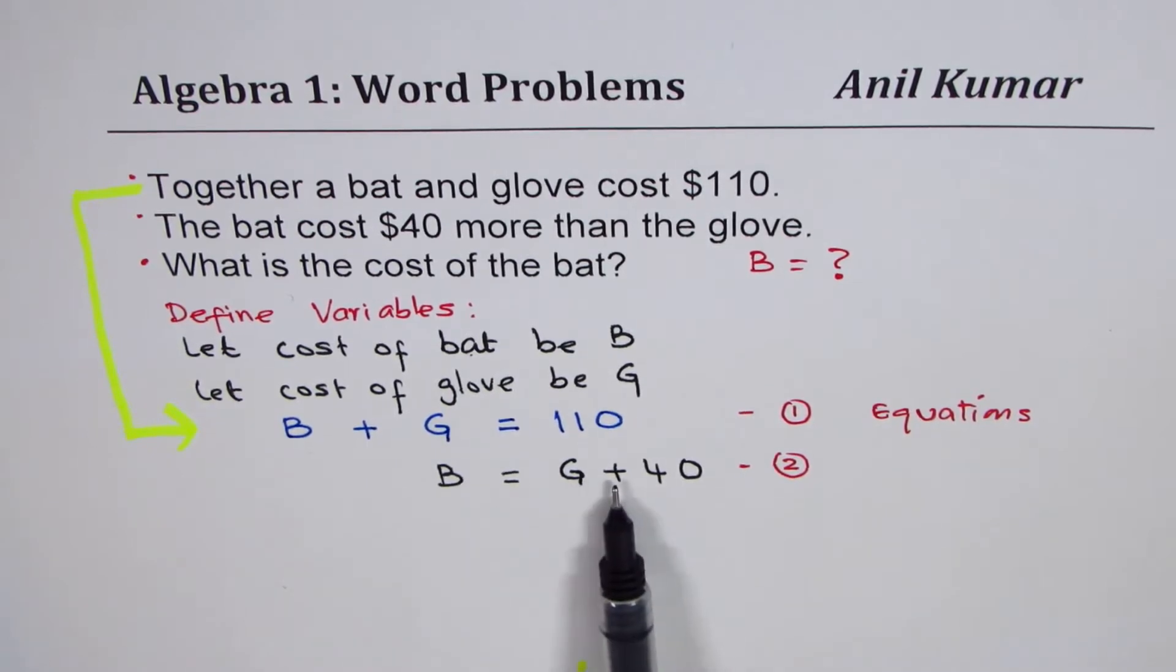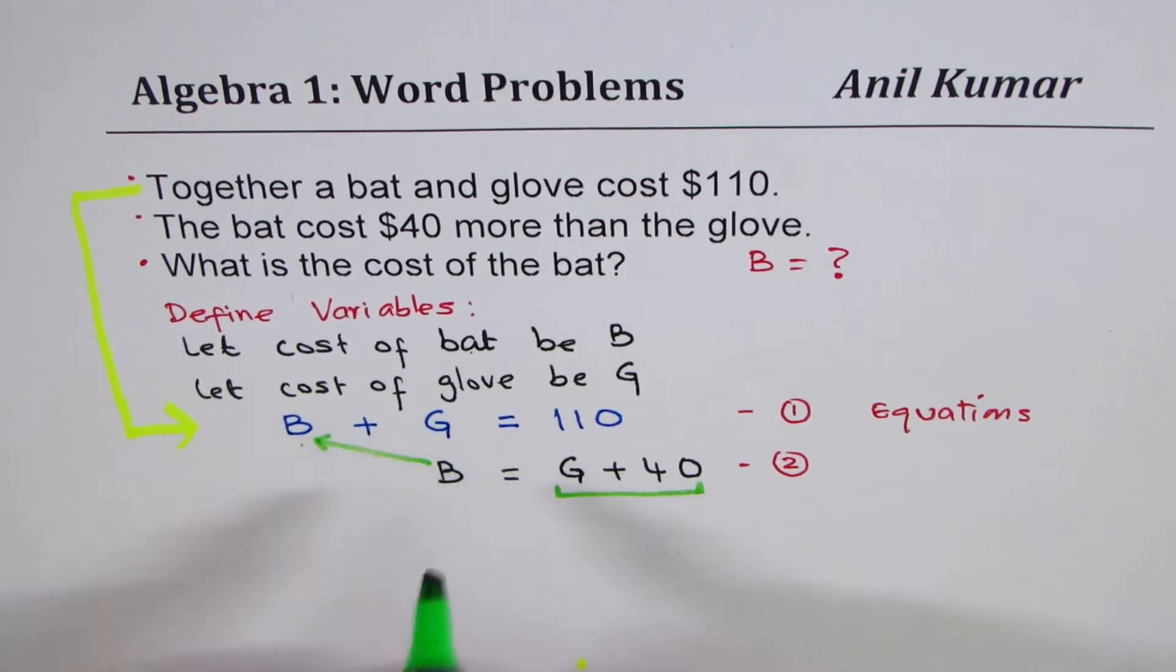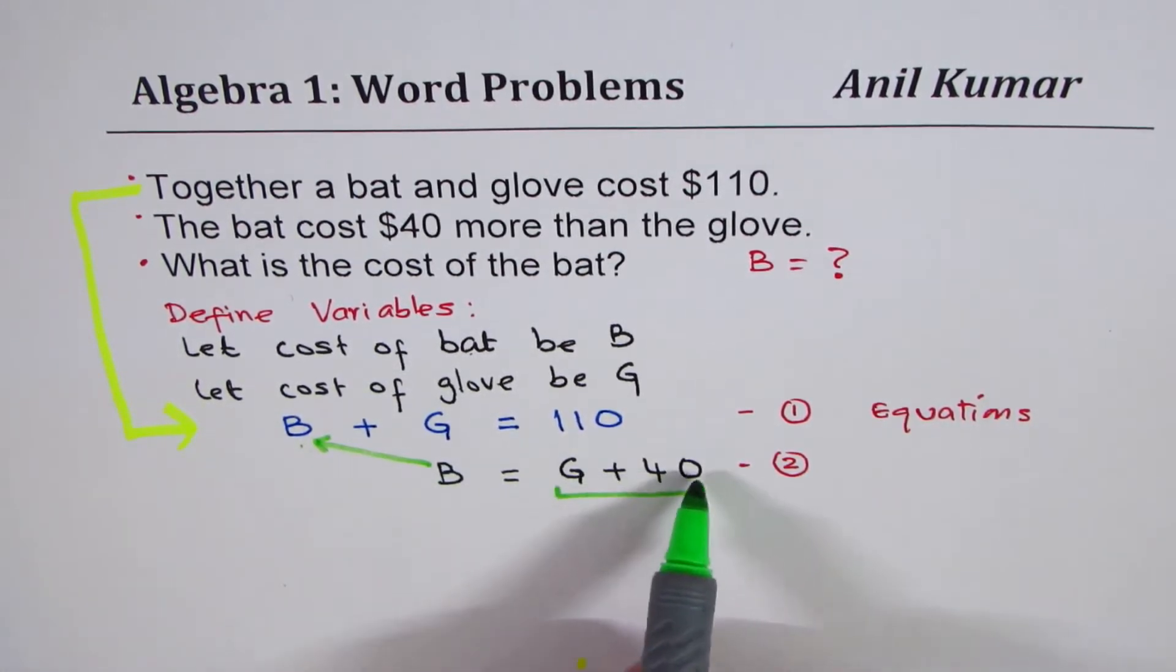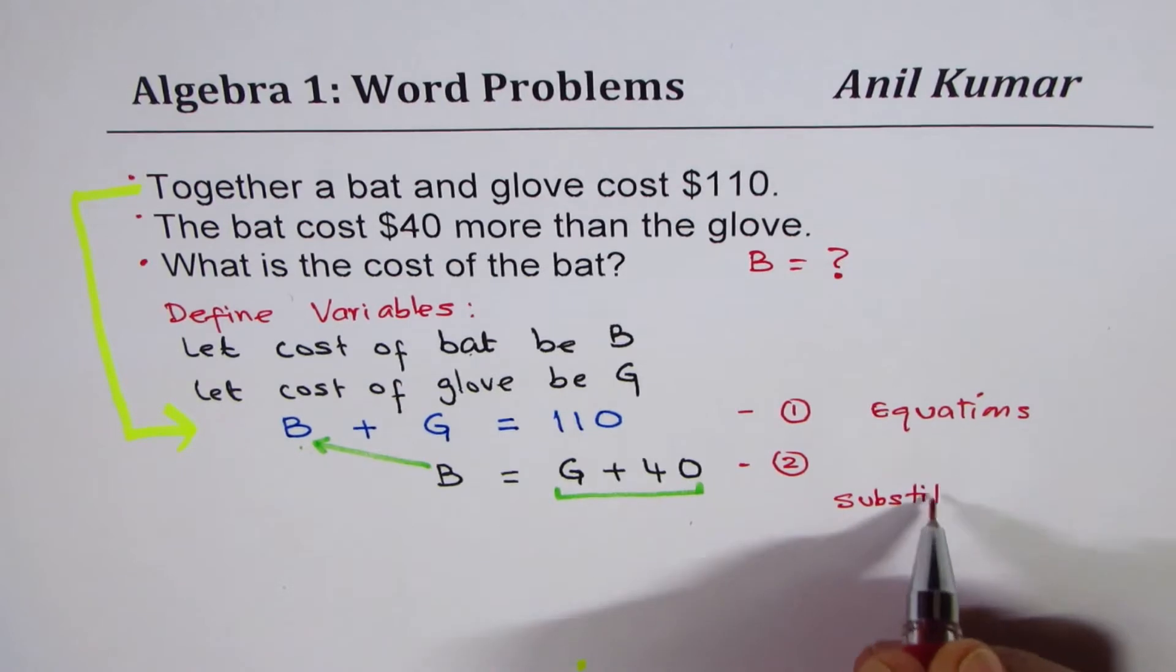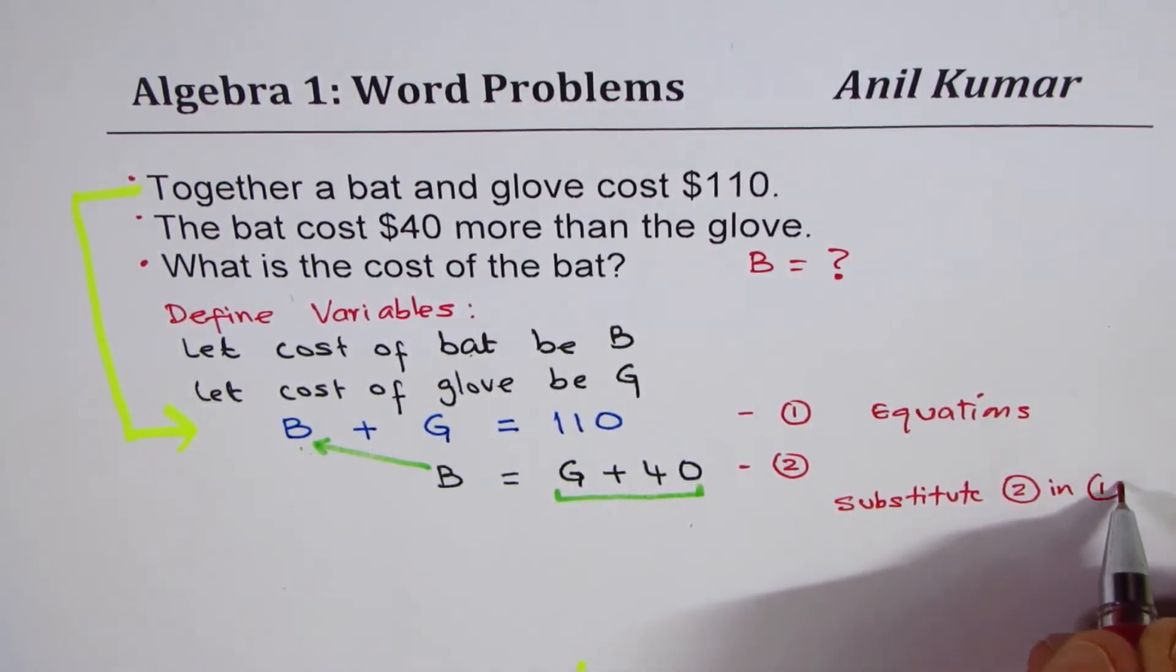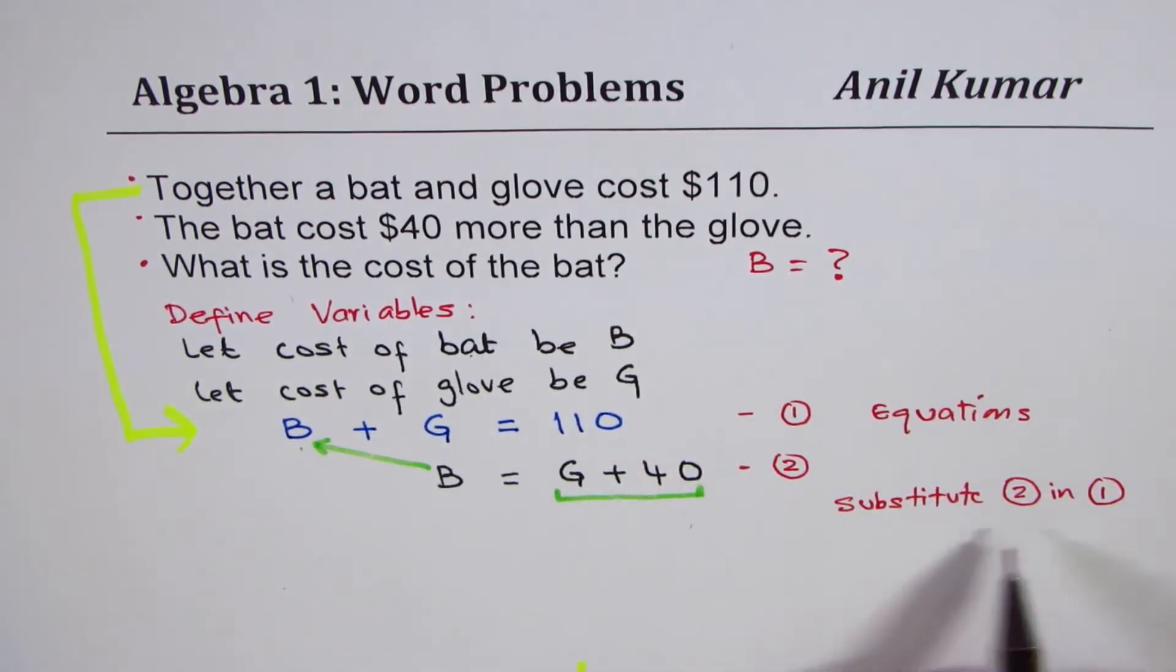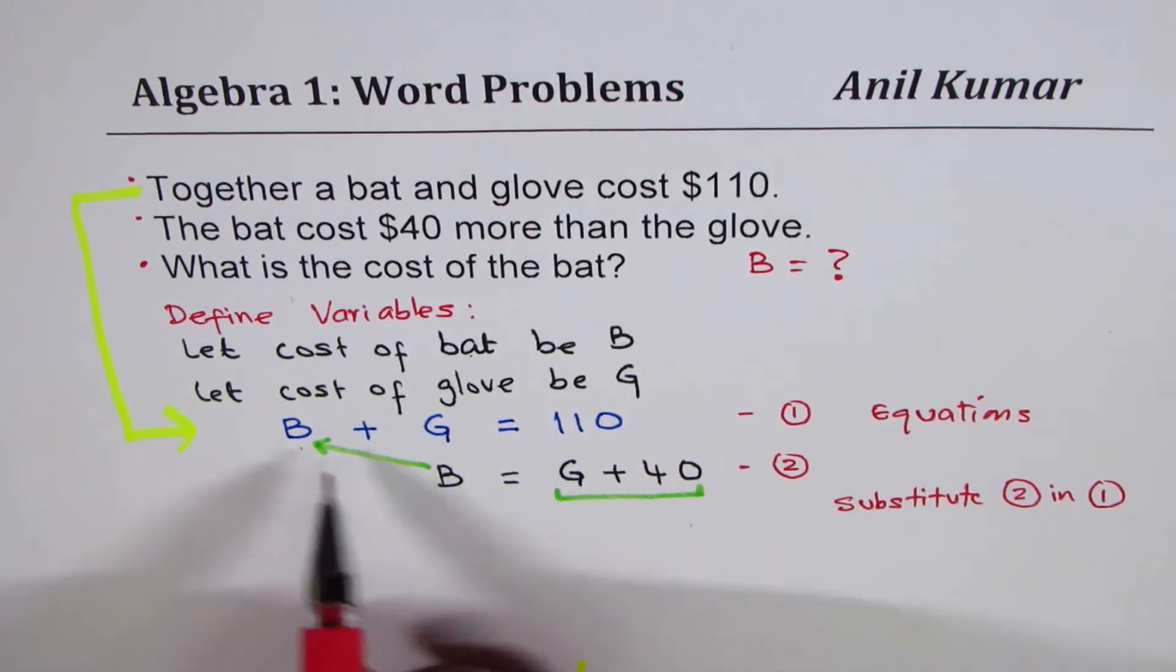So, we know bat is gloves plus 40. I'll replace this bat B with gloves plus 40. So, instead of B, I will write G plus 40 and see what do I get. So, we substitute equation 2 in equation 1. Substitute means replace that B with G plus 40.